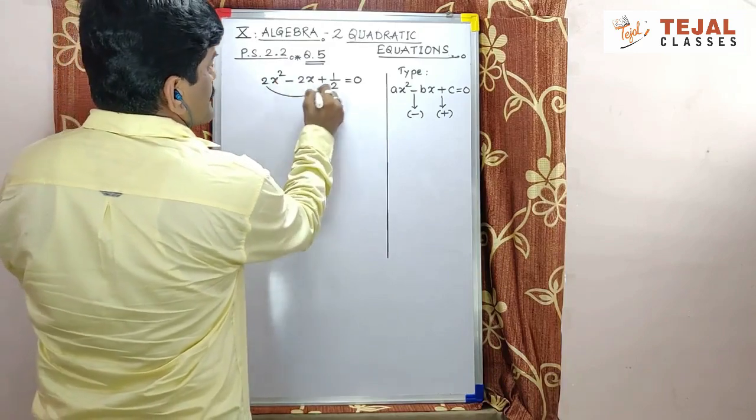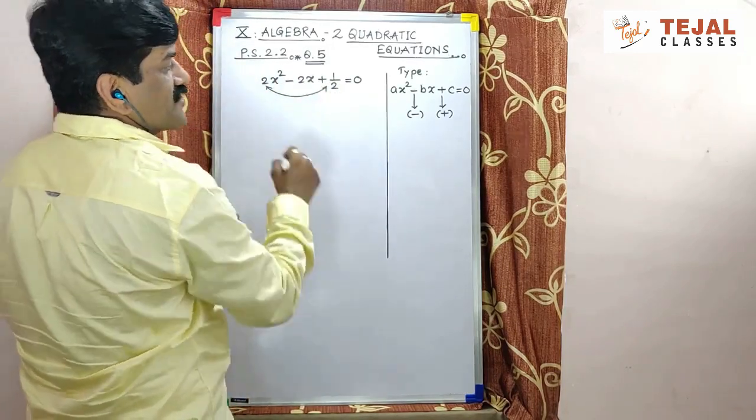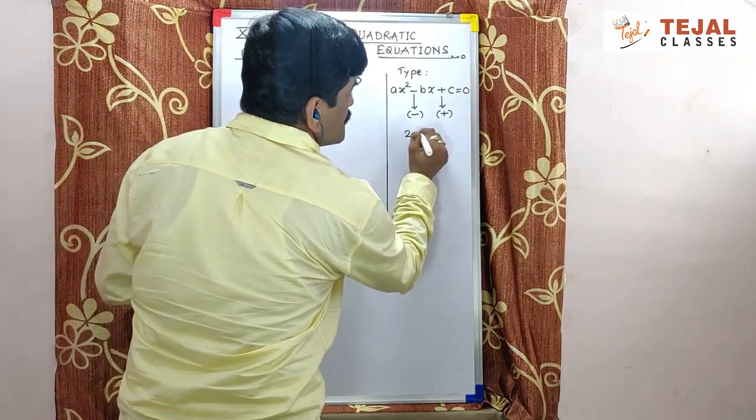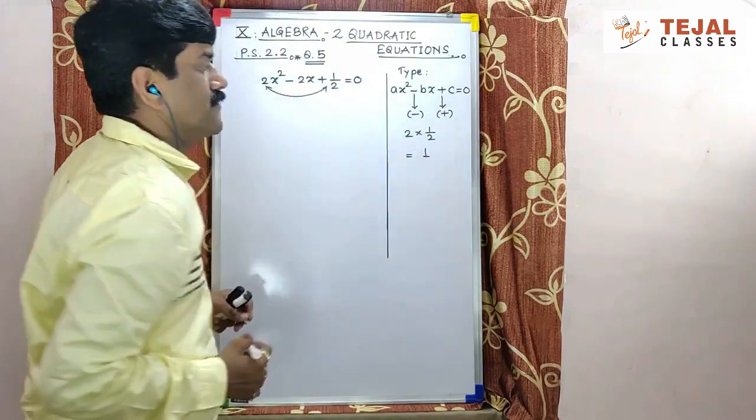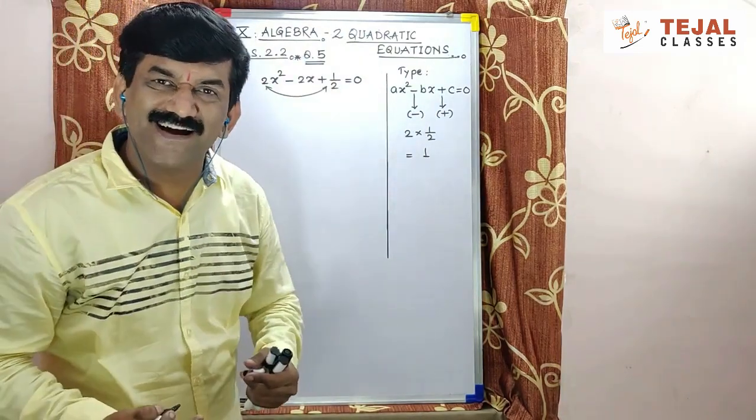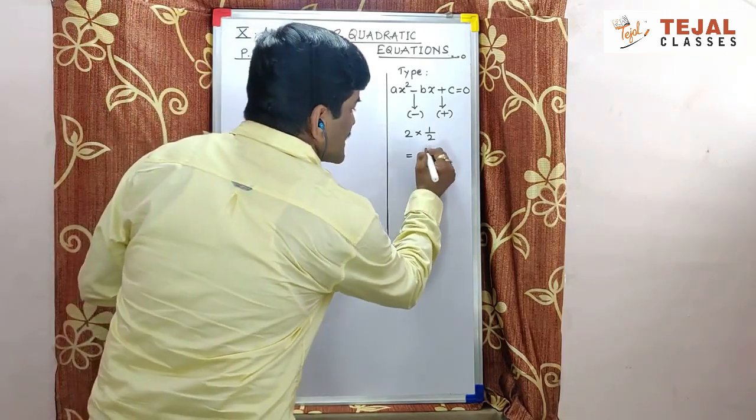First of all, we have to multiply x square ka coefficient and constant. What is 2 multiply by 1 upon 2? Final answer is 1. Ek number answer ho gaya. Kyunki 1 ke factors kaun aane wala hai? 1 and 1, 110 percent.